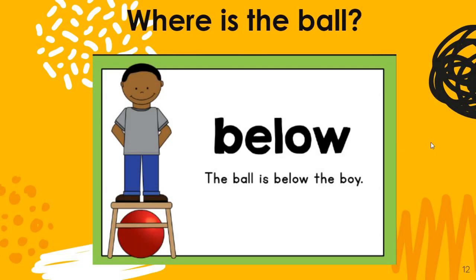Where is the ball? Below. The ball is below the boy. Read it with me: The ball is below the boy. See how he is above the ball — we could use our position words to say where he is, but we're talking about where the ball is. The ball is below his feet, so it's under him. Under is another word for below.